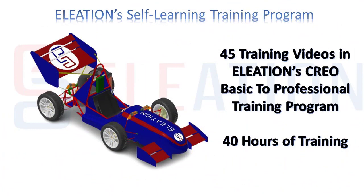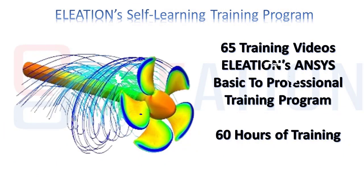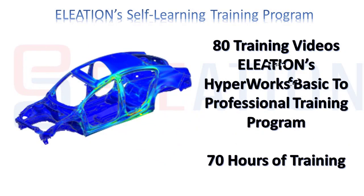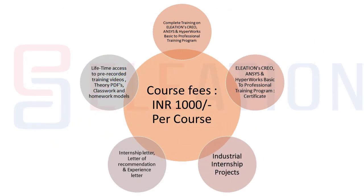Eleation's Creo Self-Learning Training Program contains 45 session videos. Eleation's Ansys Self-Learning Training Program contains 65 session videos. Eleation's HyperWorks Self-Learning Training Program contains 80 session videos. The course fee for Eleation's Self-Learning Training Program is rupees 1000 per course.